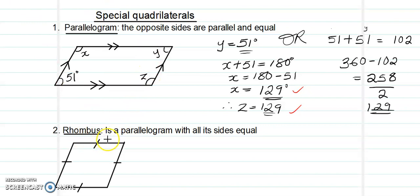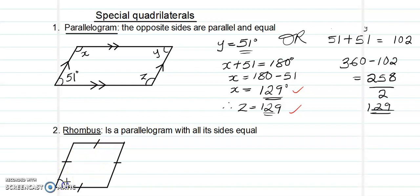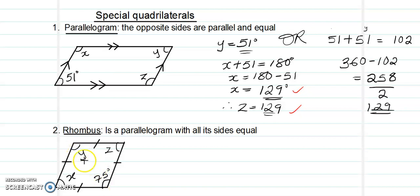A rhombus is a parallelogram in which all four sides are equal. The same principles apply: opposite angles are equal. In this rhombus we have the angle x here, the angle y here, and z here. Maybe we are given one angle as 75 degrees and asked to find the letters. To find the letters, we know that the two pairs of opposite angles are equal.